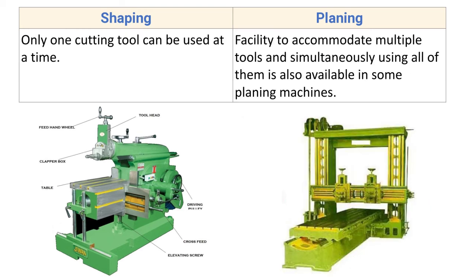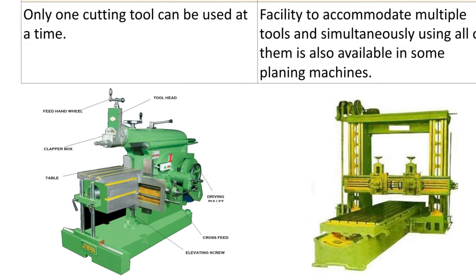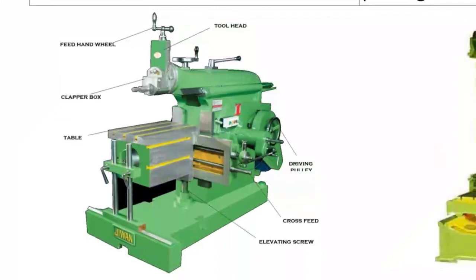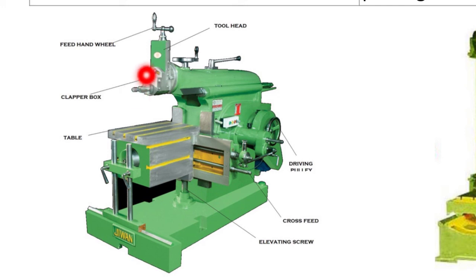Next point: only one cutting tool can be used at a time on the shaper machine. A single-point cutting tool is fixed to the tool post and used to remove material from the surface of the workpiece.